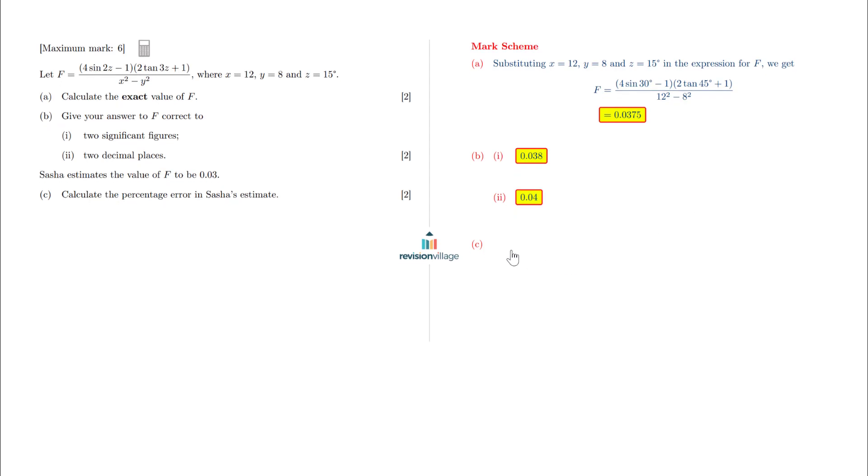In this question, we're going to answer part C. Part C asks, calculate the percentage error in Sasha's estimate. We are told that Sasha's estimate is 0.03. Got to be careful here with the letters because E actually stands for exact in the formula. So my approximation, VA, is 0.03.